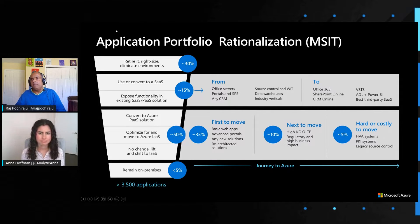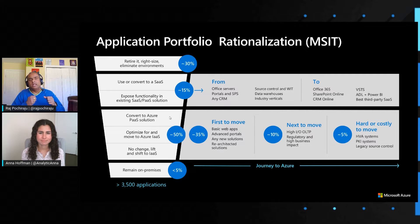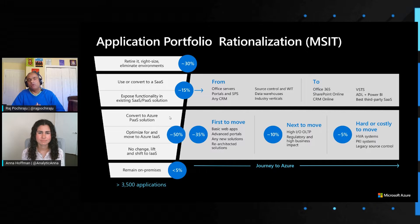The majority — about 50% of applications — fell into the bucket where some were given a lift and shift migration to infrastructure as a service, and others had more investment put in to refactor them to leverage cloud-native platform as a service. The decision depended on how ready those applications were and how much effort migration involved.